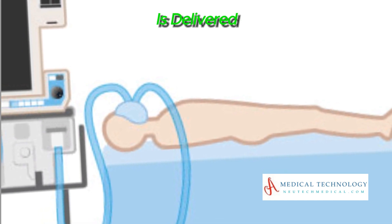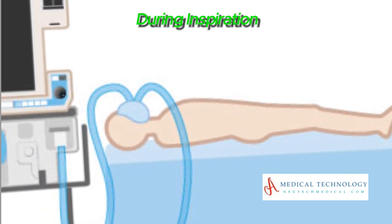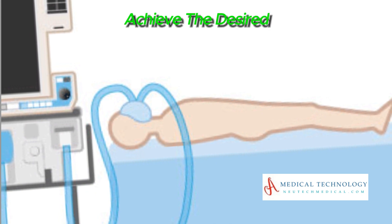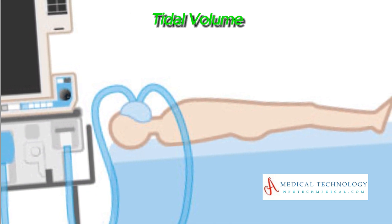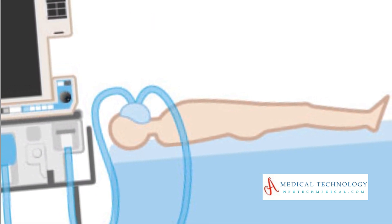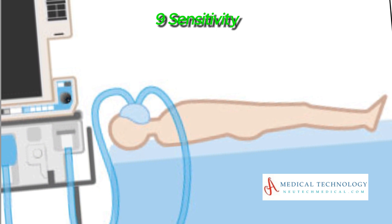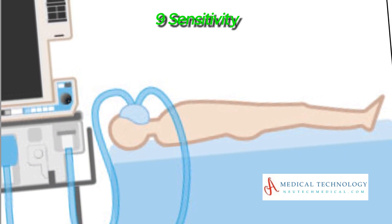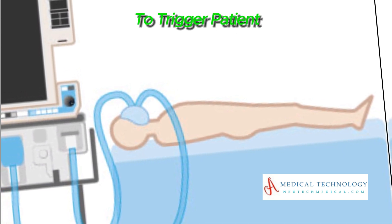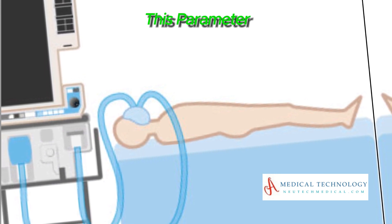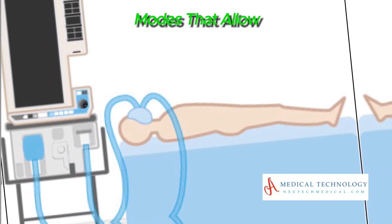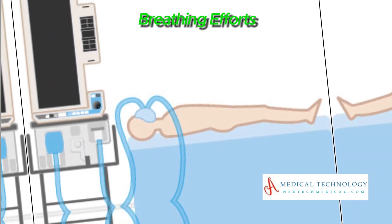Eighth, flow rate: specify the rate at which gas is delivered during inspiration. Flow rates are adjusted to achieve the desired tidal volume and enhance patient comfort. Ninth, sensitivity: set the level of sensitivity to trigger patient-initiated breaths — this parameter is crucial in modes that allow spontaneous breathing efforts.